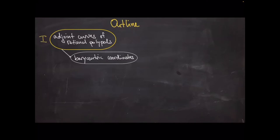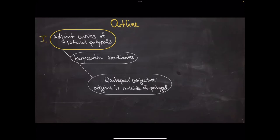The outline today is: first I'll define what these adjoints are and how you get Wachspress coordinates from them. Then there is a closely related conjecture that is still widely open and very important for geometric modeling — namely that the adjoint lies strictly outside of your polytope or polypole.